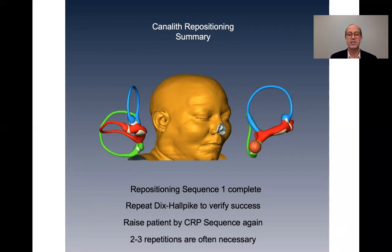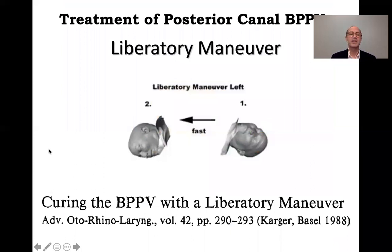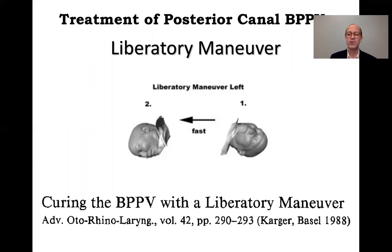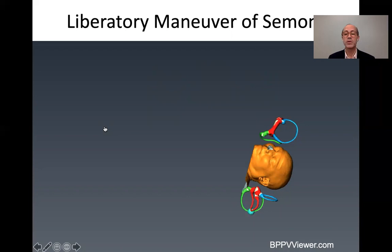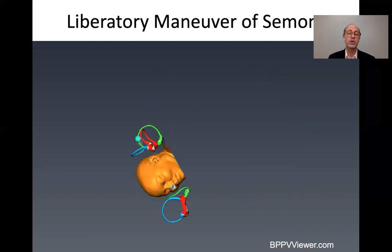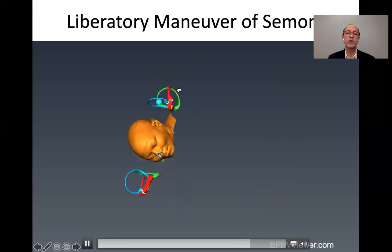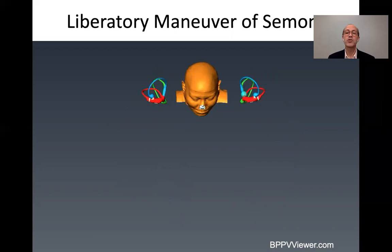The liberatory maneuver works and is very efficient and fast. Described by Alain Sémont, it was conceived at a time when it wasn't clear whether cupulolithiasis or canalolithiasis was really the cause, but it seemed to address both. For a left posterior canal: the patient is brought down and loaded, wait about a minute for everything to load, then quickly move to the other side along the RALP or LARP plane — the otolith falls over the circumference rather than back, and when the patient sits up with the head tipped forward the maneuver is complete.